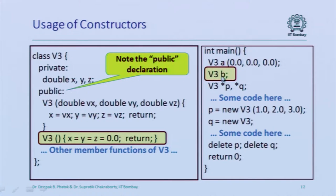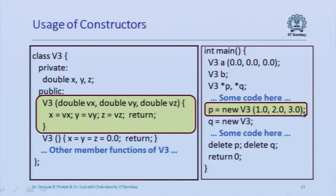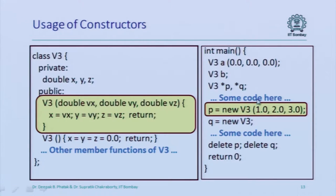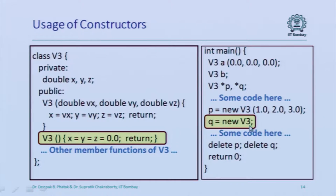Object B of type V3 is allocated with no parameters, so the no-parameter constructor gets invoked. Then a dynamically allocated object of type V3 is created passing three parameters, so that constructor function gets invoked. It does not matter whether you are doing dynamic or static allocation, or whether it is on the stack or heap — whenever an object of a particular class is created, the first thing that happens is the constructor function gets invoked. Which constructor depends on what parameters you are passing when creating the object.